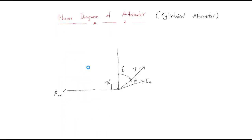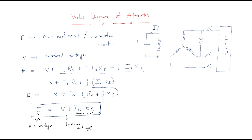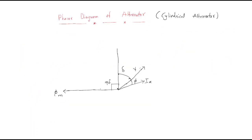Looking at the formula, the combination of terminal voltage plus the drop gives the open circuit voltage. From this, we draw two drops. The first drop is ia·Ra, which is parallel with the terminal voltage vector. Both are in parallel.